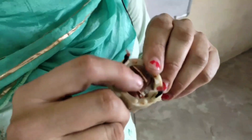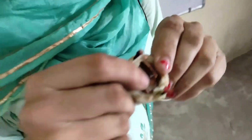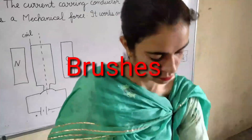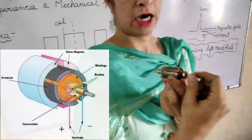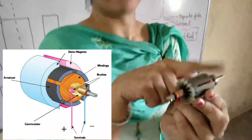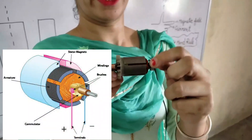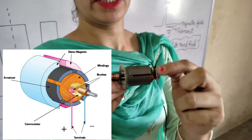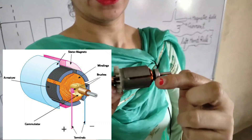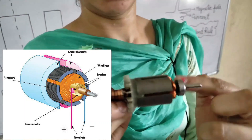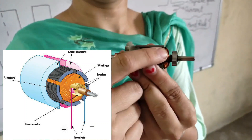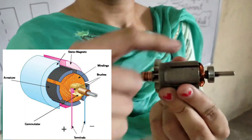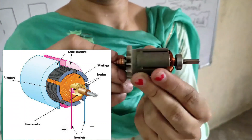We have our brushes. After that, we have our shaft. We move the shaft with a finger. We have copper wires wound on the armature.